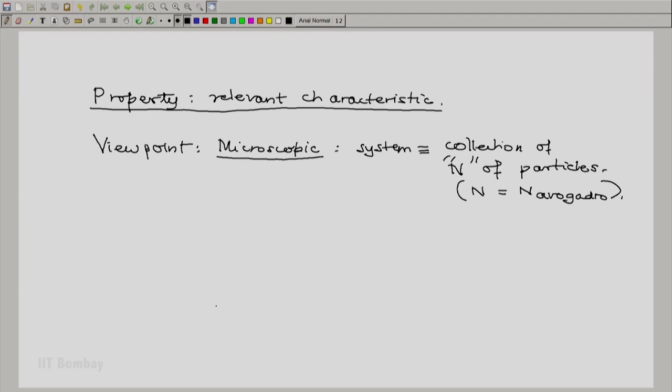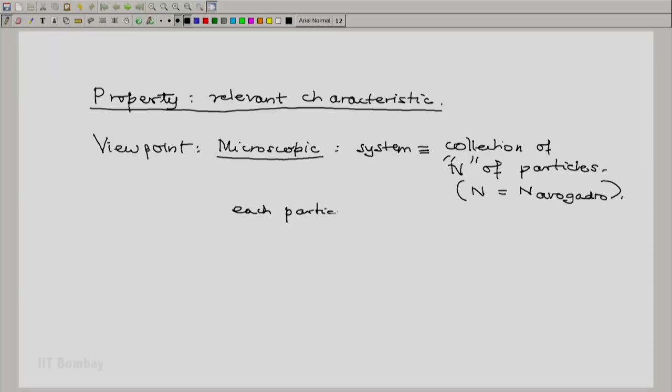And each of these particles is moving randomly during the course of a system. Particle may move from one part of the system to any other part of the system. So each particle will have a position and will have a velocity. The position of each particle will be a function of time. The velocity of each particle will also be a function of time. And that means, suppose there are large number n of particles, we will have to specify n positions and n velocity vectors, each one as a function of time.